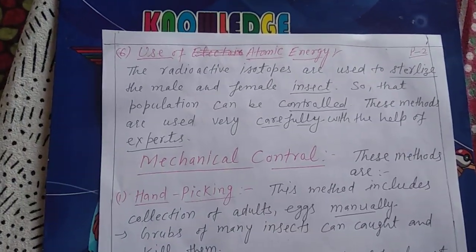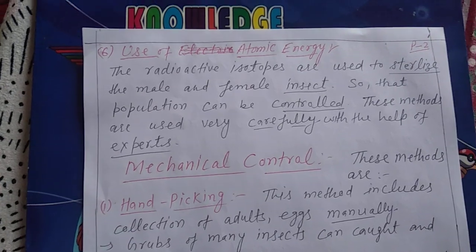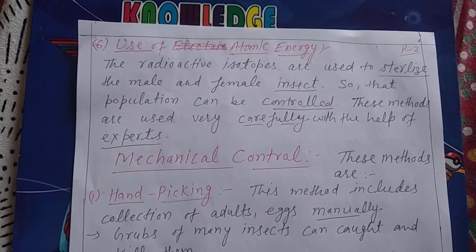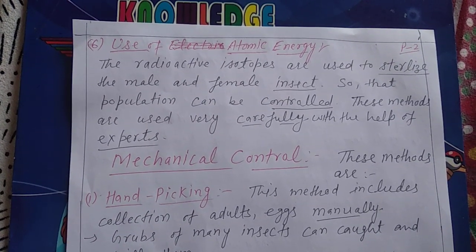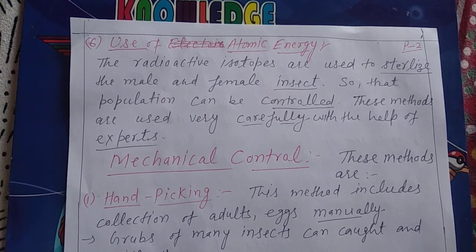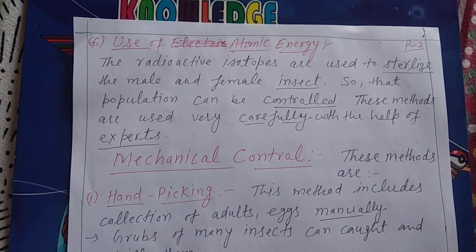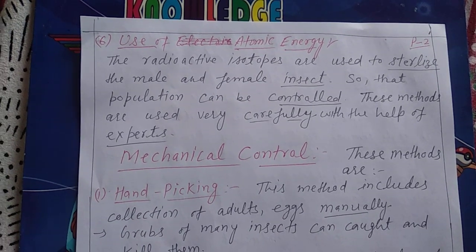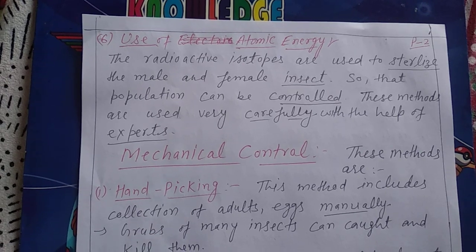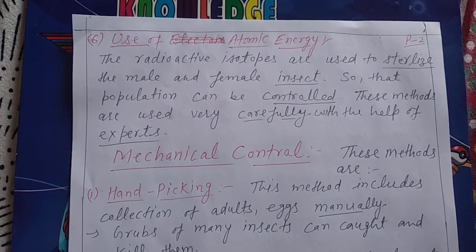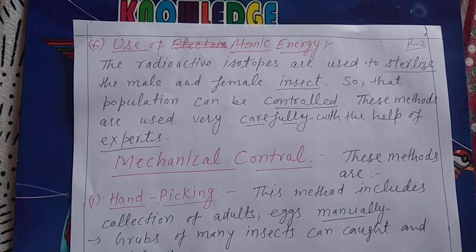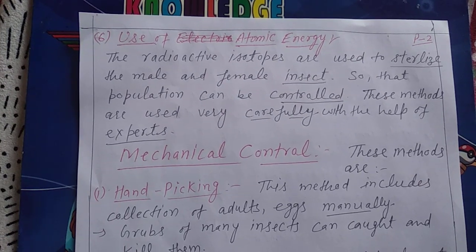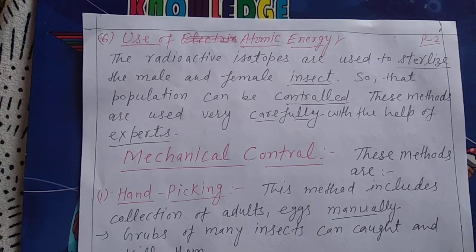Next is the use of atomic energy. We use radioactive isotopes to sterilize insects so that the gonads remain immature and the insect population is controlled. This method can be used effectively for population management.